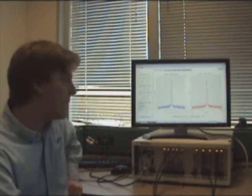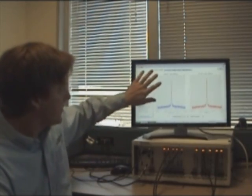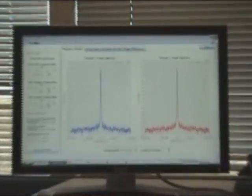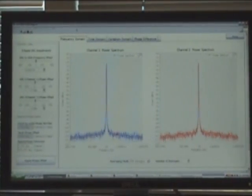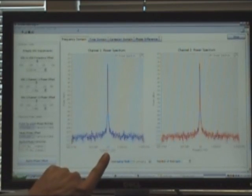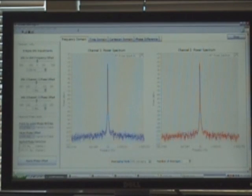we can look in LabVIEW at some of the phase characteristics between each of the two channels. Now the first graph I'm going to show is simply the frequency domain of what's being generated by each of the vector signal generators. Now you can see on the graph I'm basically generating just a single-tone CW at 1 GHz, and you can see those are the same.